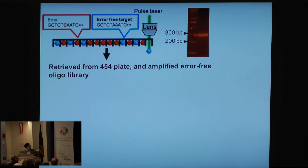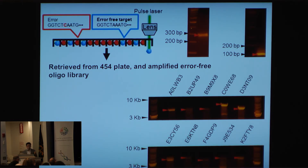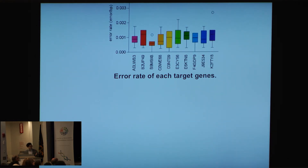We retrieved from the 454 plate, amplified the error-free oligonucleotides from only one tube, enzymatically digested the flanking sequences, and used these oligonucleotides to construct 10 Cas9 genes as a test, as shown here. We evaluated the Cas9 genes by synthesizing around 10 clones per each Cas9 gene, and found that the error rate of these target genes was around one error per thousand base pairs.